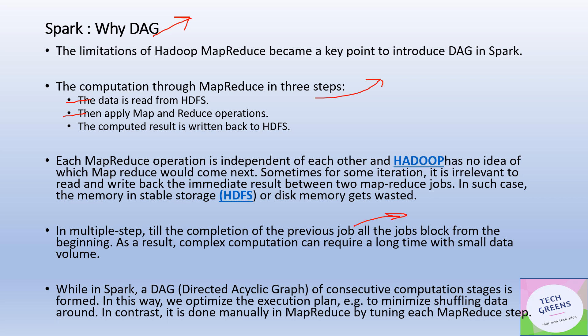In Spark, a DAG of consecutive computation stages is formed so that all tasks which can run in parallel can be grouped into a single stage, allowing optimization of the entire execution plan. It also minimizes the shuffling of data. These are the rationales and reasoning behind why DAG was introduced in Spark compared to the inherent problems with Hadoop MapReduce.